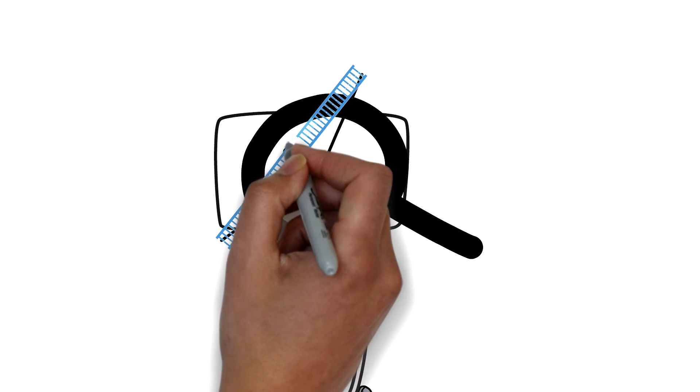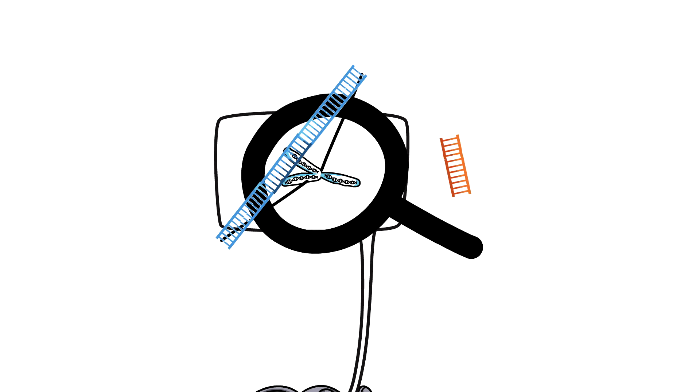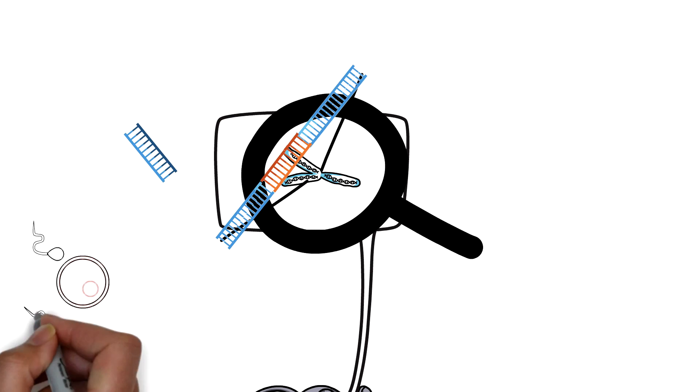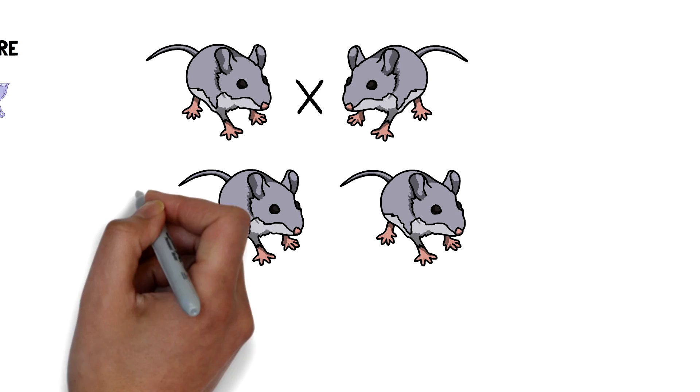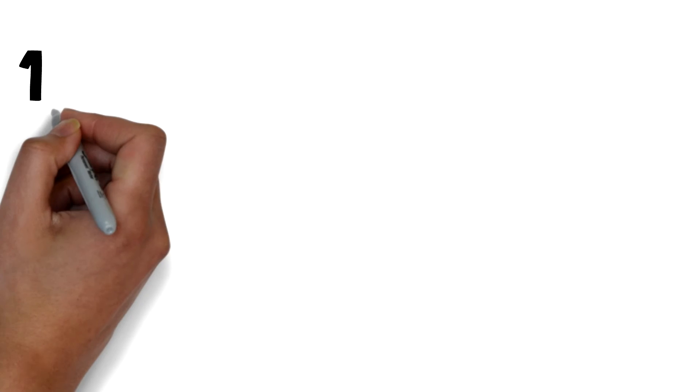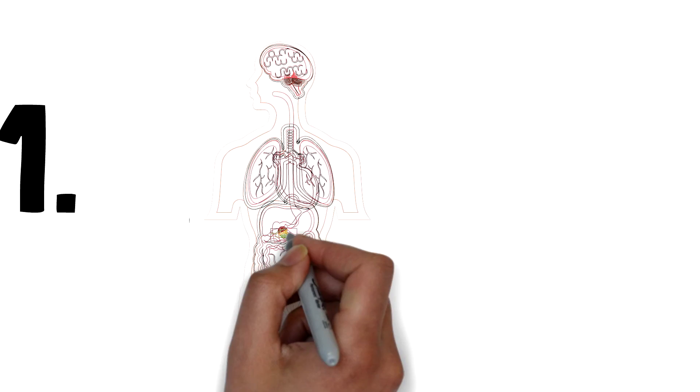in the mice is by altering the genetic structure after the eggs have been fertilized but before they are birthed, and then breed them for multiple generations. In other words, we need to: one, locate the gene that codes for